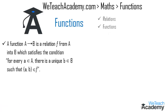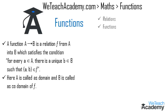A function f from A to B can be defined as a relation from A into B which satisfies the condition: for every a belonging to A, there is a unique b belonging to B such that (a, b) belongs to the function f. Here A is called the domain and B is called the co-domain of the function f.